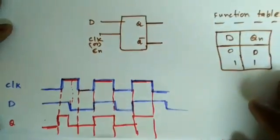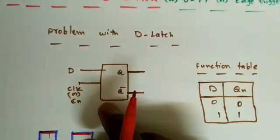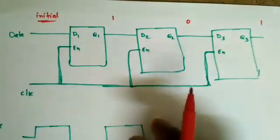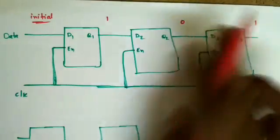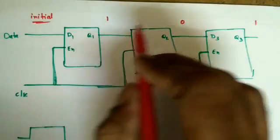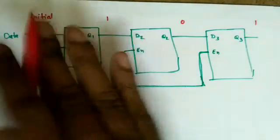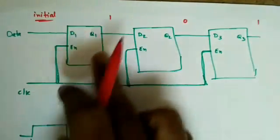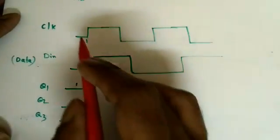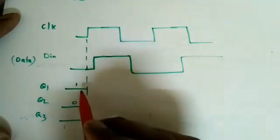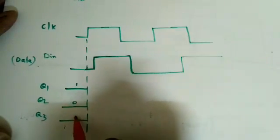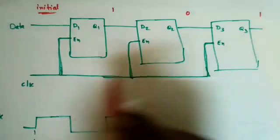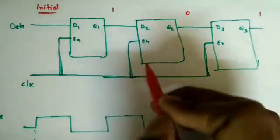The main problem becomes clear when we use latches to store information. Suppose three D flip-flops are connected in cascade to store three bits of information — initially it is 1-0-1. Now I want to change this to 0-0-1, meaning the next data I need to store is 0-0-1. I need to change the output of this first D latch. The clock is shared and D input is being changed to 0.